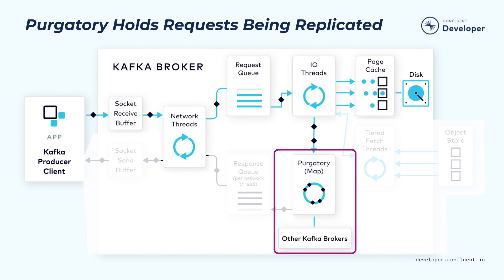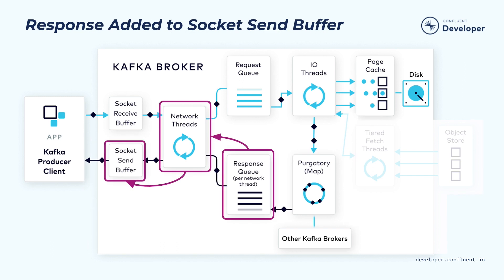While waiting for the data to be fully replicated, we don't want to tie up this I/O thread because the number of I/O threads is limited. Instead, what we'll do is stash those pending produce requests into a data structure called Purgatory — it's like a map. Then this I/O thread can be freed up and used to process the next request. Once the data for the pending request is fully replicated, this pending produce request will be taken out of Purgatory, and then a response will be generated and put into the corresponding response queue for the network thread.